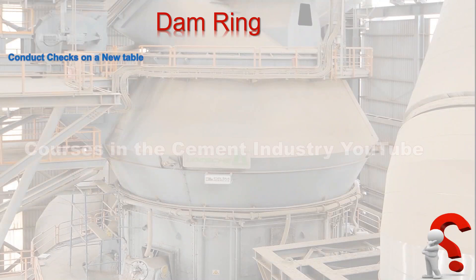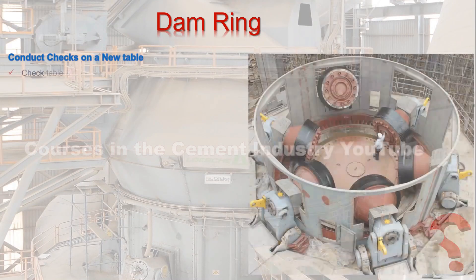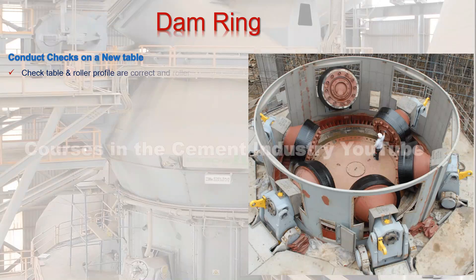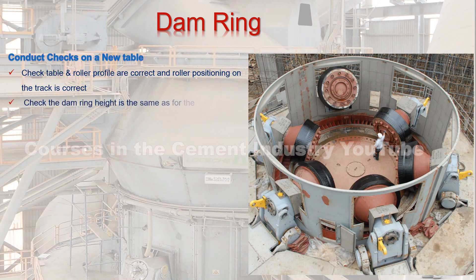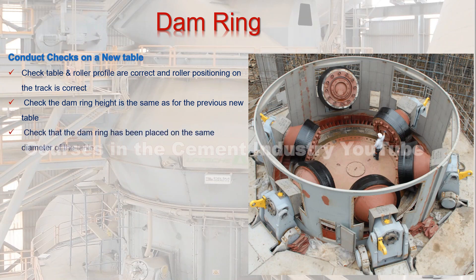Conduct checks on a new table: 1. Check that table and roller profile are correct and that roller positioning on the track is correct. 2. Check that the dam ring height is the same as for the previous new table. 3. Check that the dam ring has been placed on the same diameter of the table as previously.